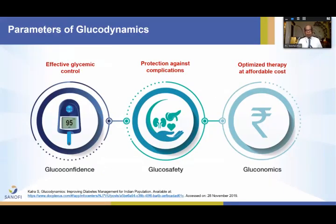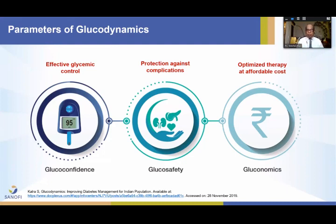When we look at glucodynamics in diabetes, we have three components. The therapy should provide glucoconfidence, which means it should provide effective glycemic control. It should also be safe, implying it does not produce any harm to vital organs in terms of cardiovascular mortality and all-cause mortality. The third component is glucoeconomics, which means it provides optimized therapy at an affordable cost.